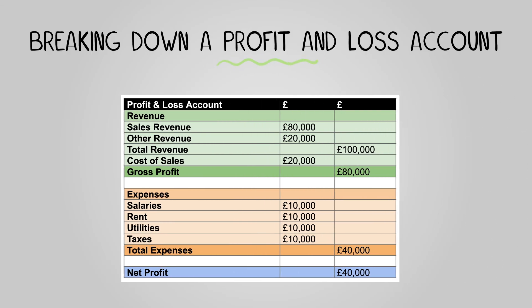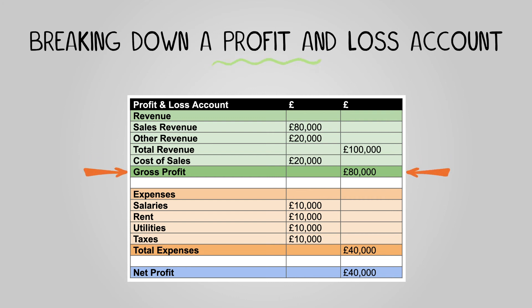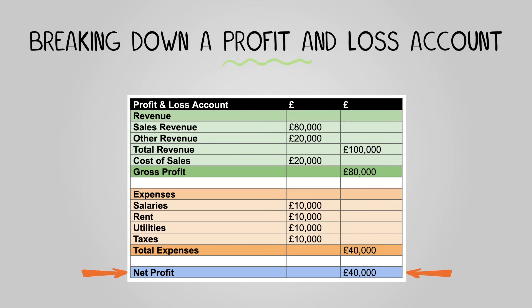In this table, we have revenues totalling £100,000 and cost of sales totalling £20,000. This gives us a gross profit of £80,000, as gross profit is revenues minus cost of sales. After this, we have our expenses which total £40,000, giving us a net profit of £40,000, as net profit is gross profit minus expenses.